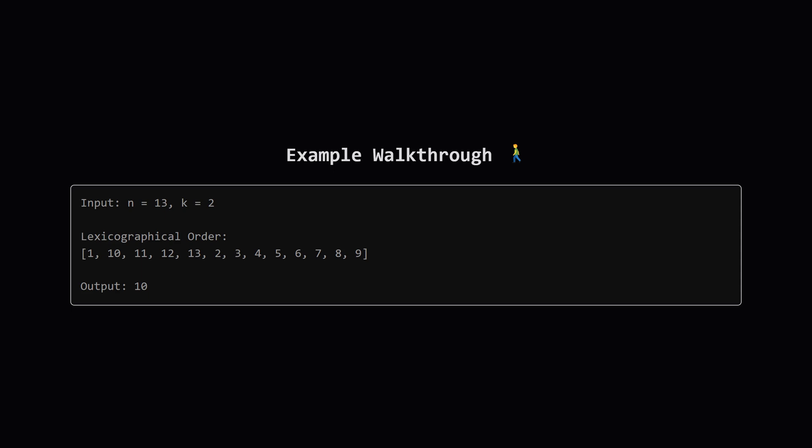So 10, 11, 12, and 13 follow. Only after we've exhausted all the numbers starting with 1, do we move on to 2. So in this weird ordering, the second number is actually 10. This is the core puzzle we need to solve.